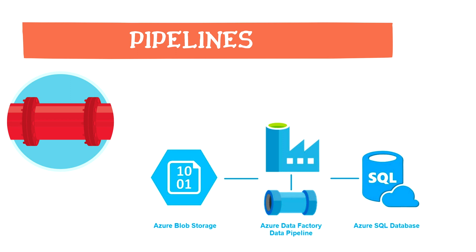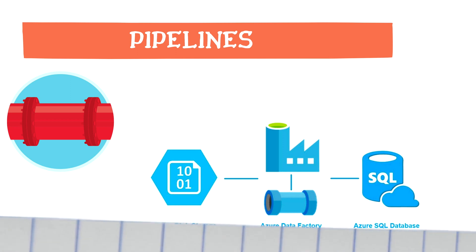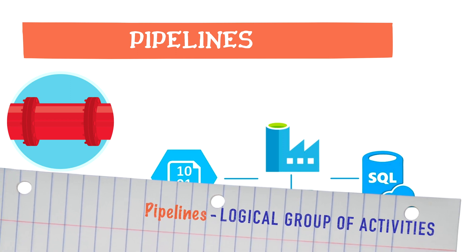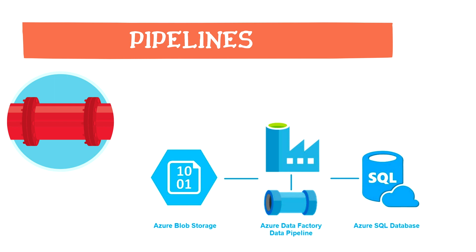There are certain terms you should be familiar with. A pipeline is a logical group of activities that performs a task together — meaning whether you are copying data, moving data, running SQL scripts, stored procedures, or managing job triggers, everything can be orchestrated within a pipeline.